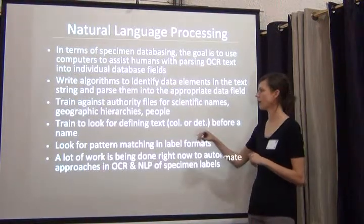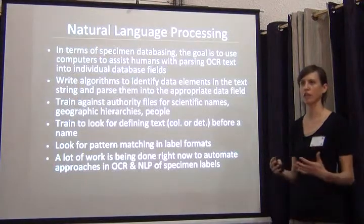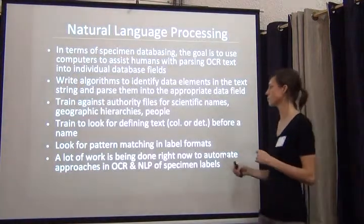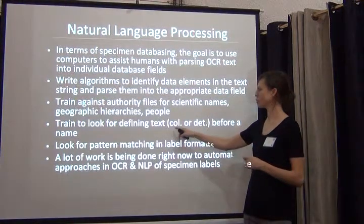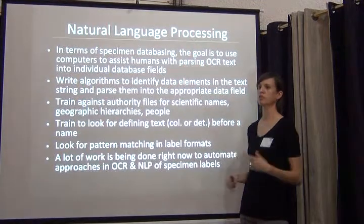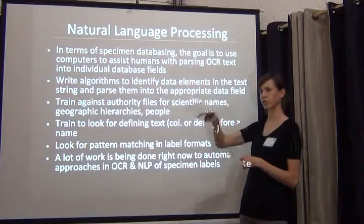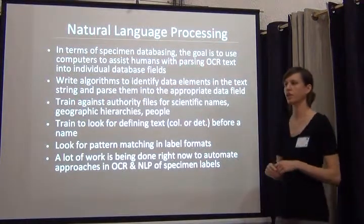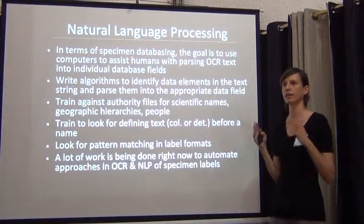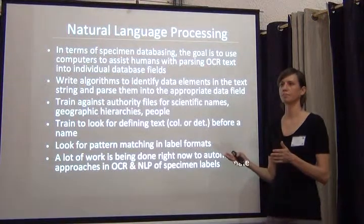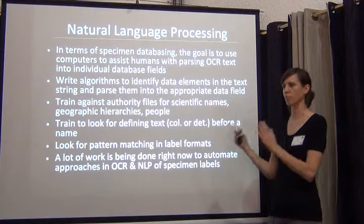You can also train a computer to look for a defining text string before a name to identify what field it should go into. A good example is for collectors — at least in English, a lot of times on newer labels you put 'col.' before a collector name. So you can teach a computer that anytime you see this beginning followed by a name, that name should go into the collector field. Same with 'det.' for determiners. There's a whole bunch of others, and you can train it for other languages too.